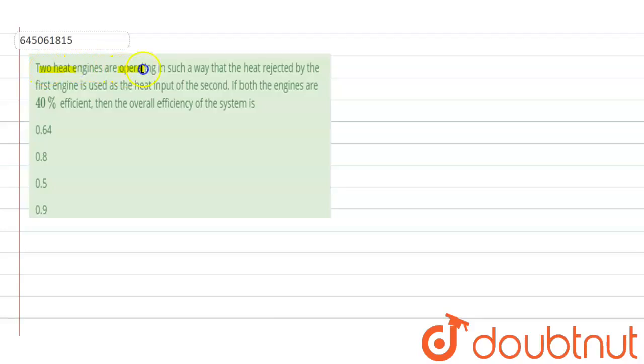Two heat engines are operating in such a way that heat rejected by the first engine is used as heat input of the second. If both the engines are 40 percent efficient, then the overall efficiency of the system is?